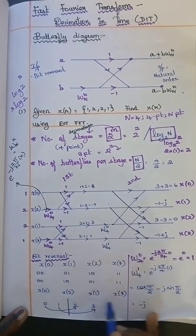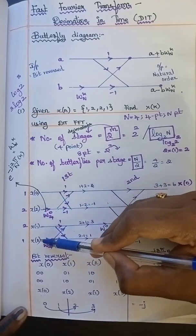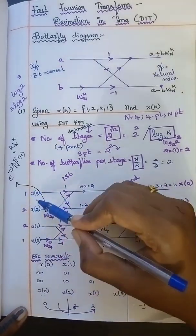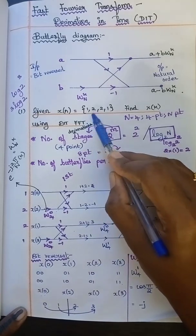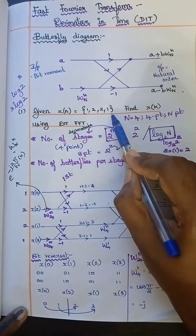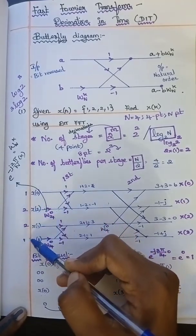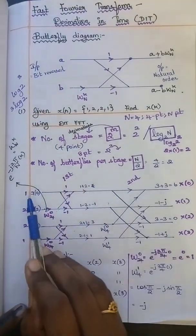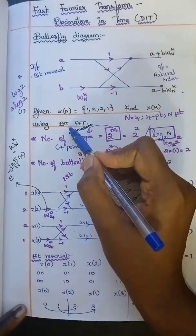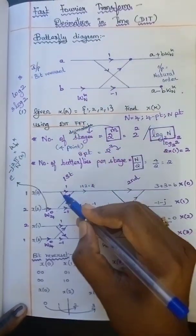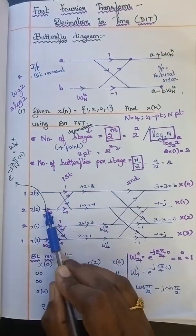So your input is x(0), x(2), x(1), x(3) — that is the bit-reversed order. The question gives input in proper order: x(0), x(1), x(2), x(3). So your input is in bit-reverse order — that's the rule for decimation in time. We have the input side in a smaller chunk, and now we will start.